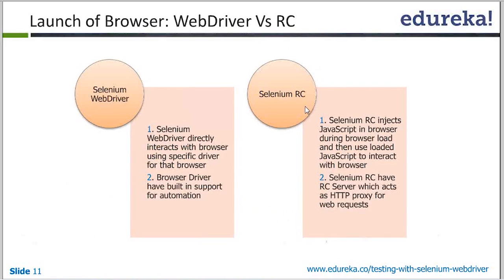When launching a browser in RC, we first needed to launch the server. If the server goes down — because it's running 24/7 — the scripts already in the queue would fail. RC server was used to go down due to system interruptions. It also used to occupy a lot of RAM when running bulk data, because whatever actions are performed get printed in the command prompt or log file, occupying lots of RAM space, causing it to shut down during bulk testing.